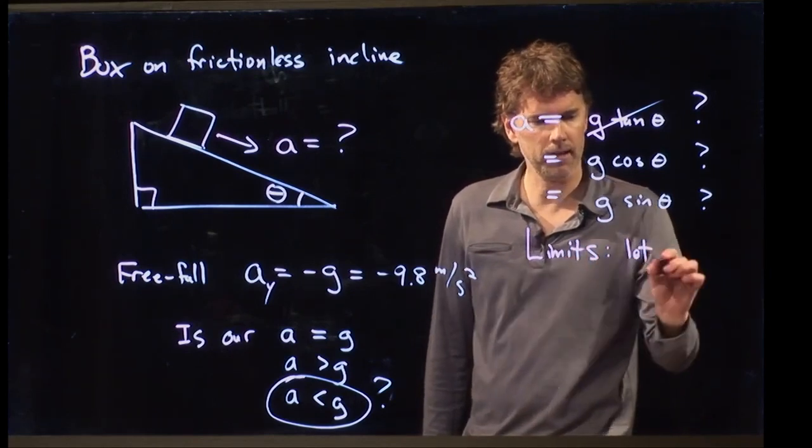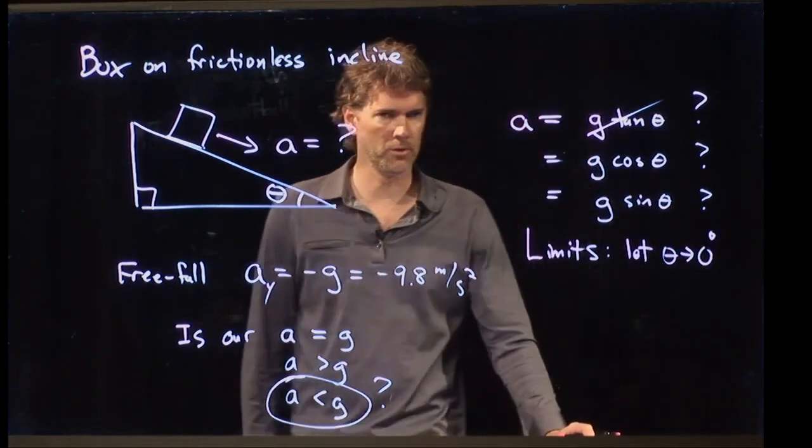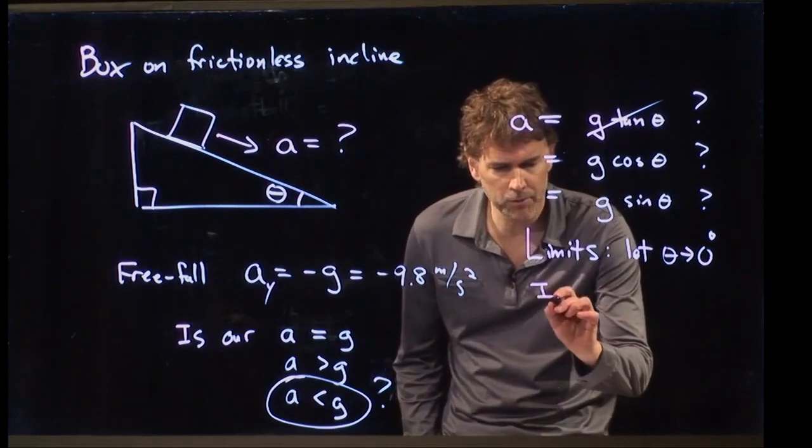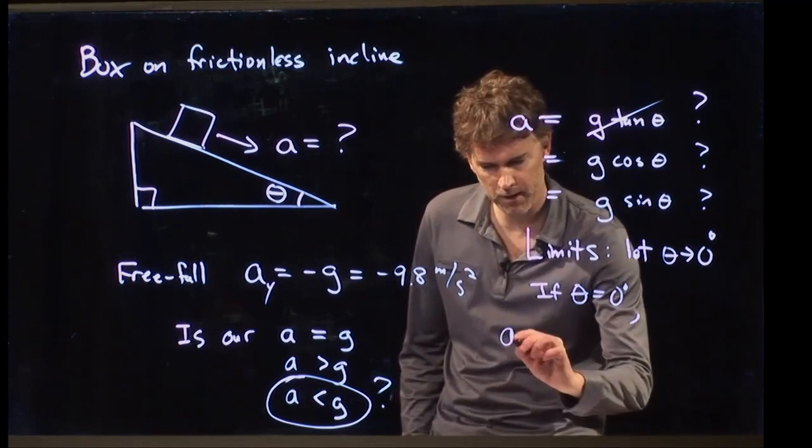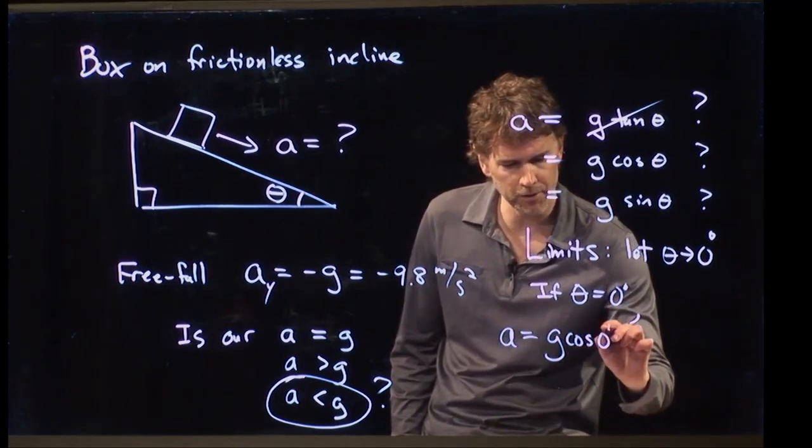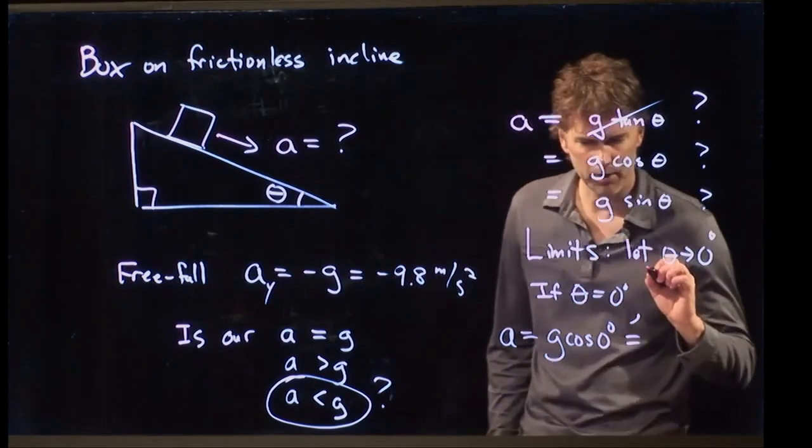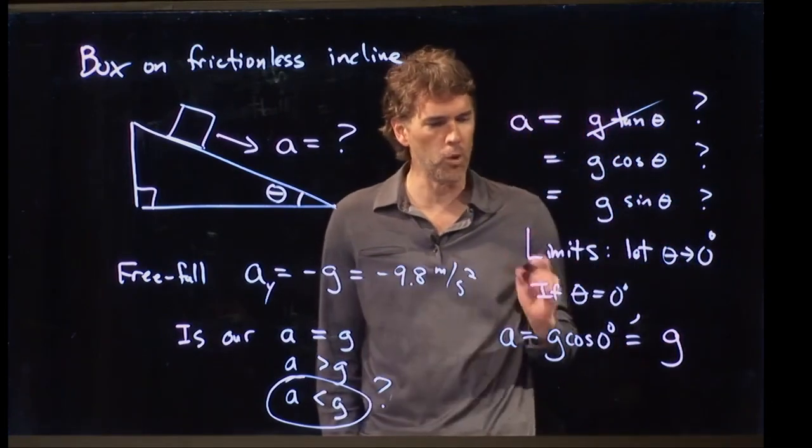Let's look at the limits. Let's let theta go to 0 degrees. So if theta equals 0 degrees, what do we get for these accelerations? Well, if a is equal to g cosine of 0 degrees, what's cosine of 0 degrees? No. 1. Good. Cosine of 0 degrees is 1.